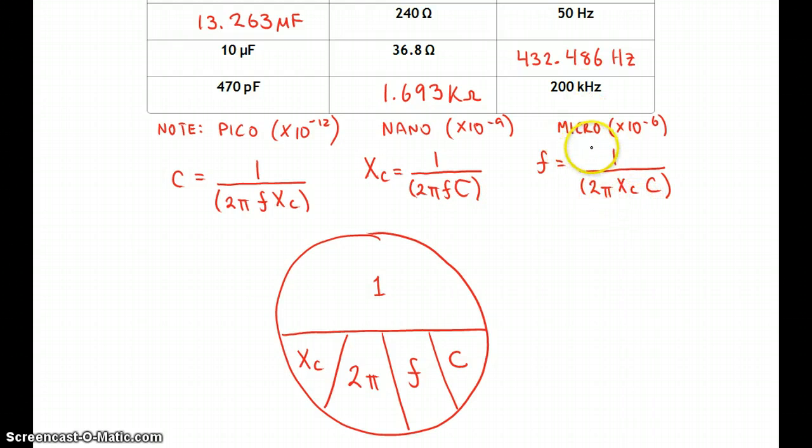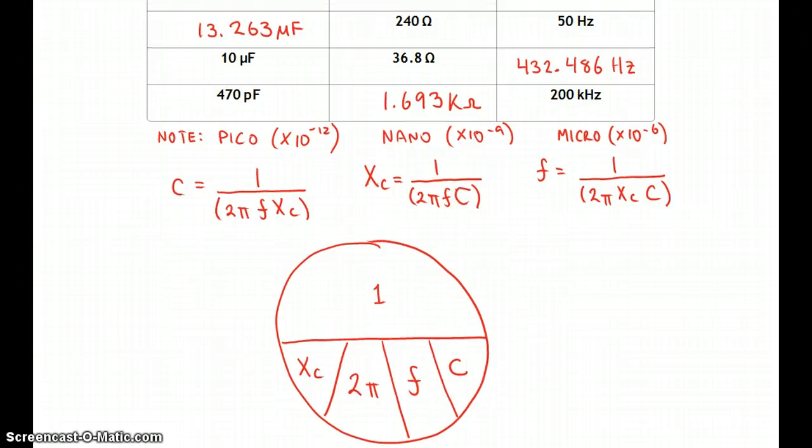I'm mostly going to give you the questions in microfarads because those are the most prominent you're going to find. But nano is 10 to the negative 9 and pico is 10 to the negative 12. So this one right here, pico is 10 to the negative 12. Okay, so once you've finished off the chart, then take a look at the values that are here.